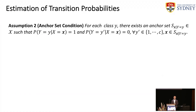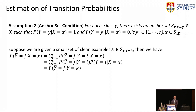The only problem remaining is how to estimate the transition probability. We introduce an anchor set condition: we assume we are given a small set of clean examples in each class, so that the conditional probability P(Y=c|X) is one for the correct class and zero otherwise. According to the important relationship described above, the transition probability can be recovered from the conditional probability P(Ȳ|X).